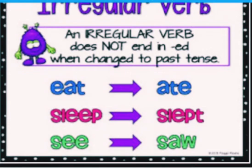An irregular verb does not end in 'ed' when changed to past tense. On the screen you can see some examples: 'eat' becomes 'ate', 'sleep' becomes 'slept', 'see' becomes 'saw' — the spellings are changed. So the spelling of 'eat' is E-A-T and the past tense of this verb is 'ate'.